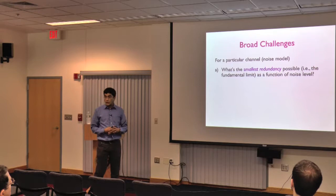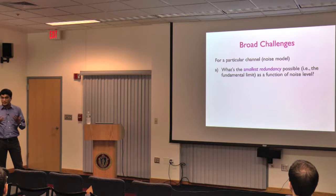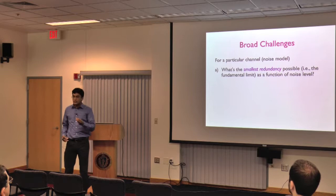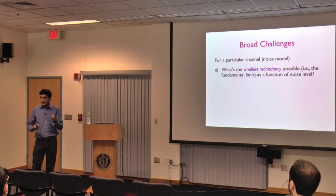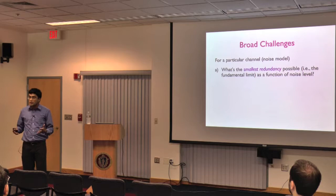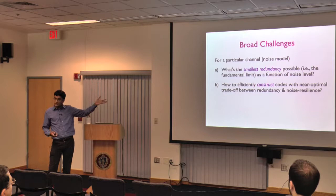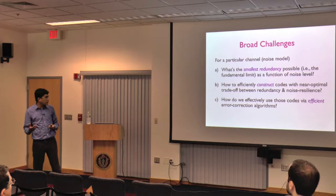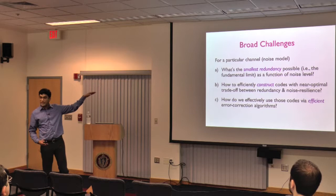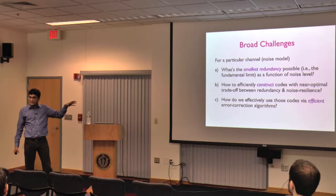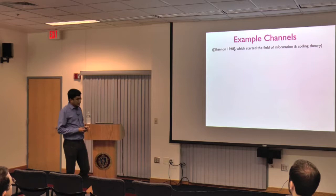The broad challenges in coding theory: for a given noise model you want to understand the smallest possible redundancy — the information-theoretic limit as a function of noise level. This is often a probability or combinatorics question. Then you want to construct coding schemes that operate close to that optimal tradeoff, and those codes should have nice structure allowing efficient encoding and error correction. The first challenge gives a baseline; the second and third are more algorithmic.